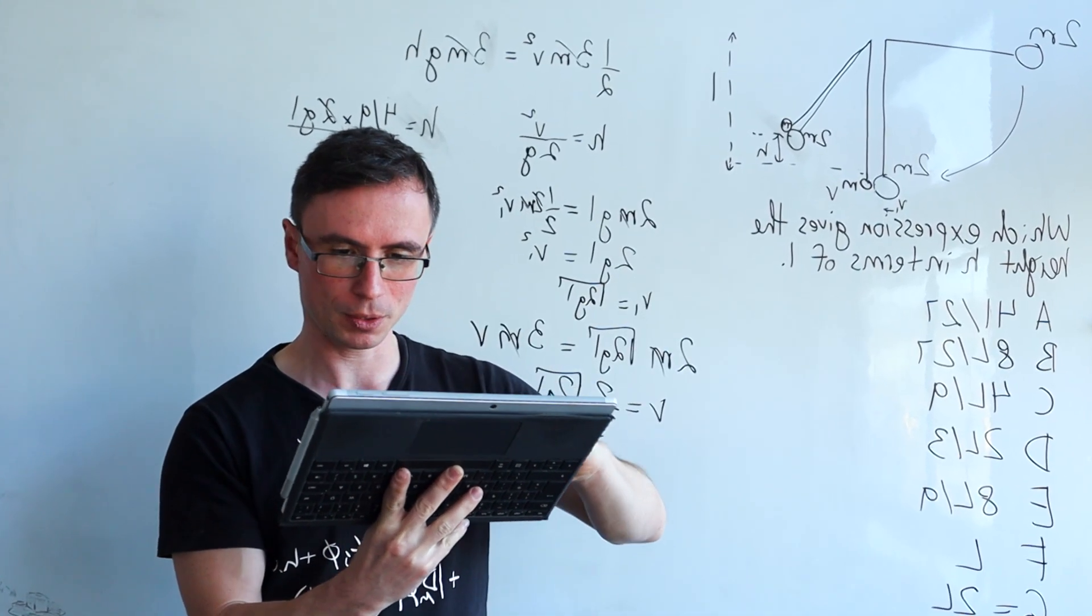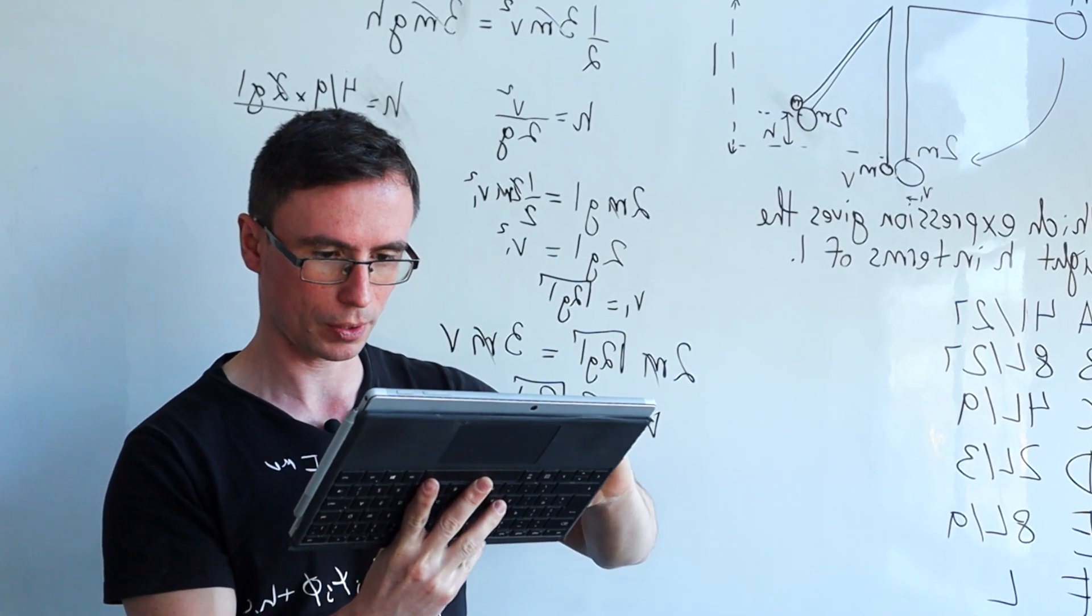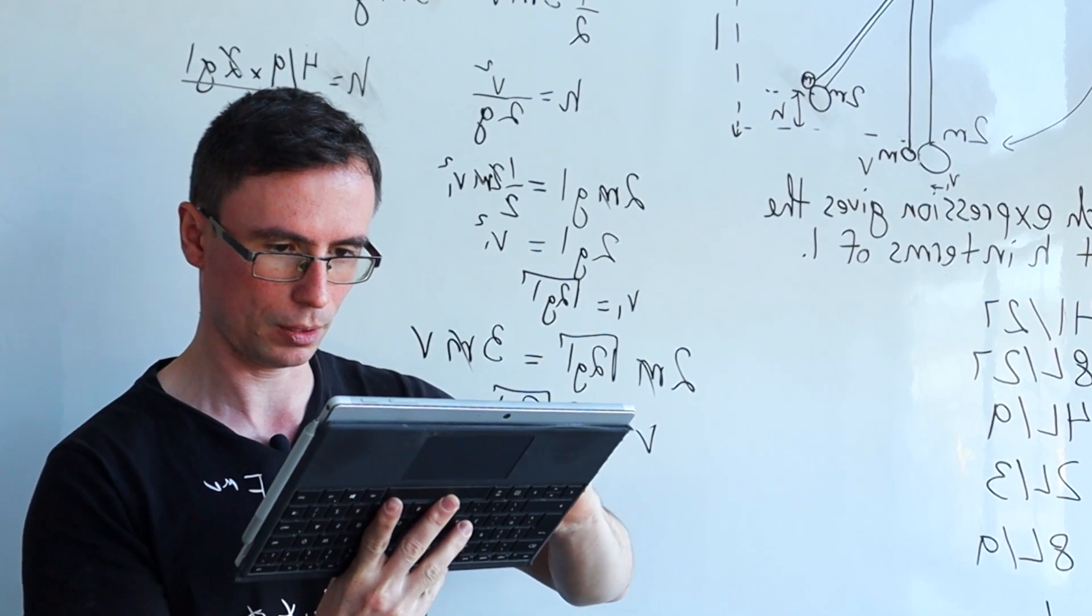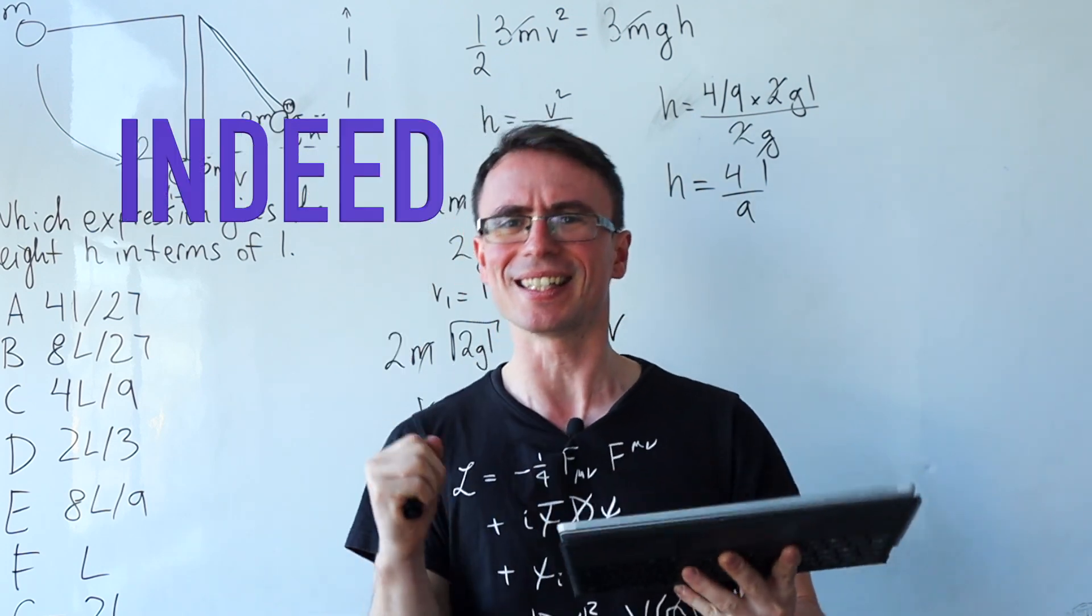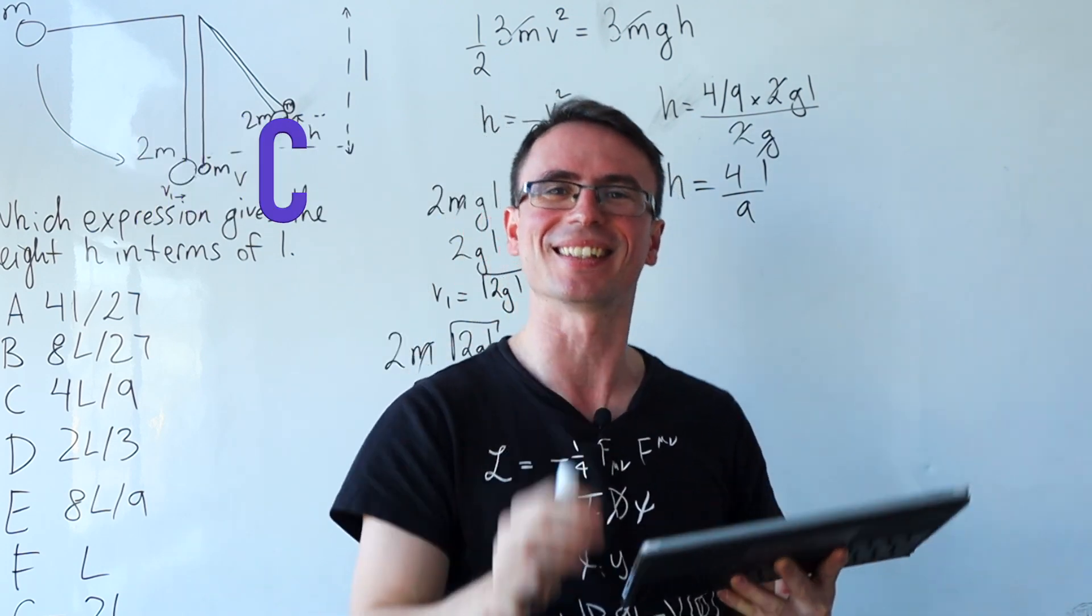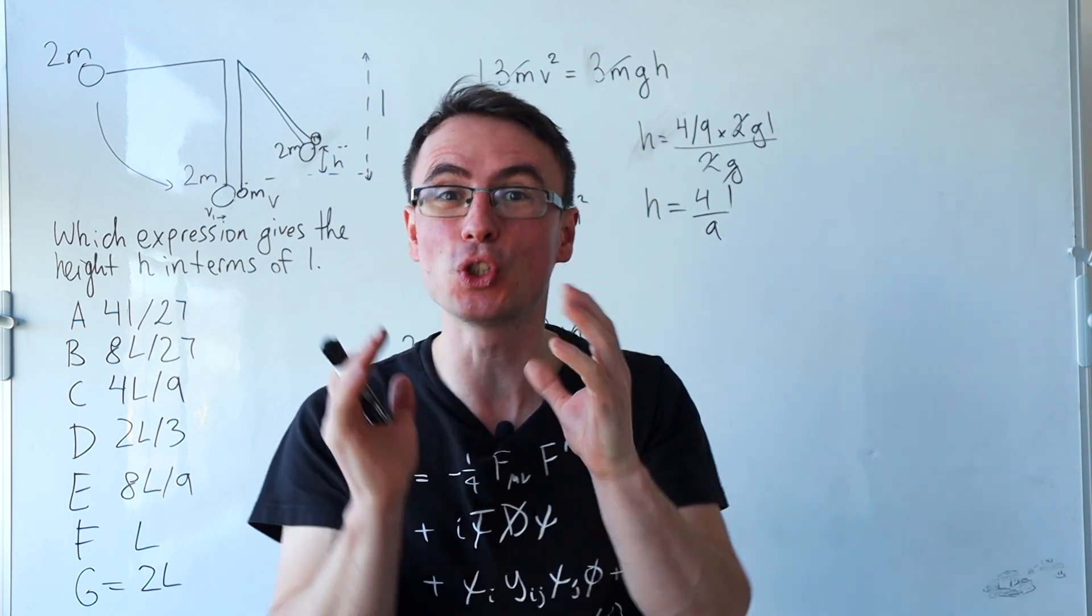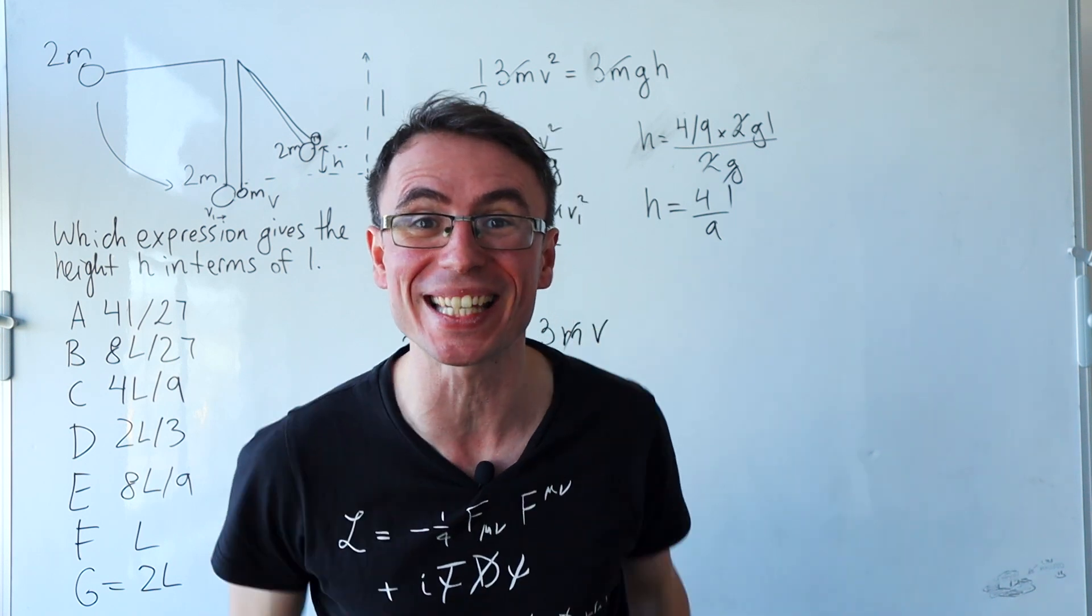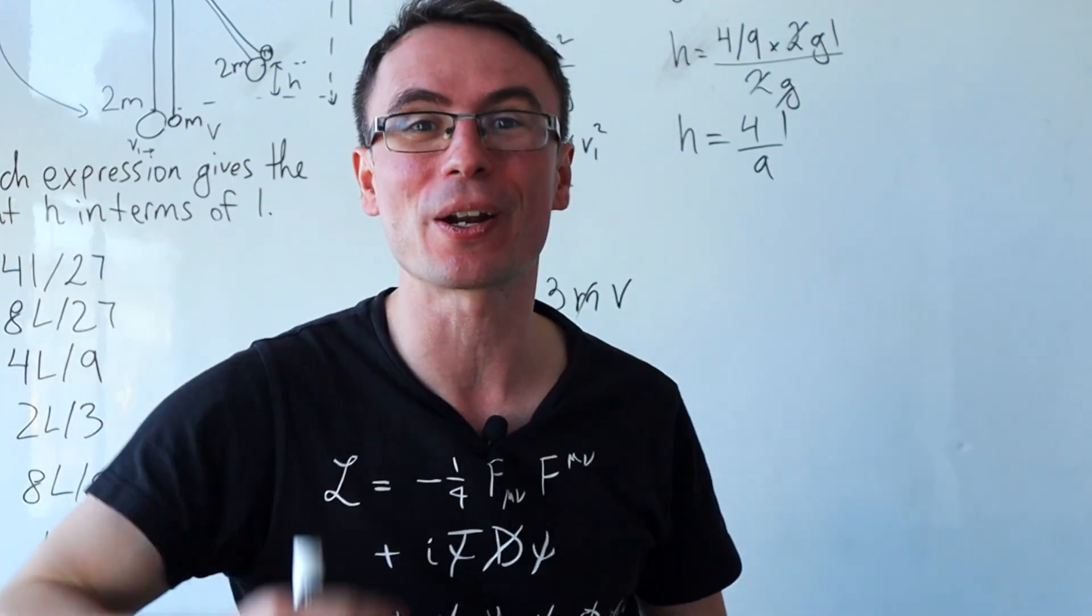Okay, so this was question 11 from the 2022 paper. Let's go back to the mark scheme. So that is section 2, question 11. And the correct answer is indeed C. Excellent. Now there are far trickier questions on this paper and your journey to understanding this exam will not be complete until you have a look at the last question right over here.